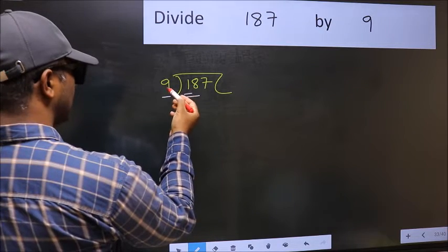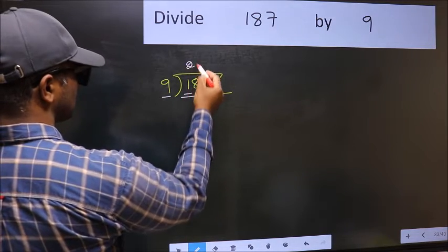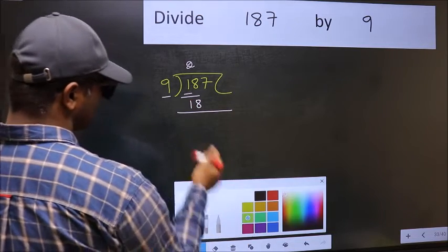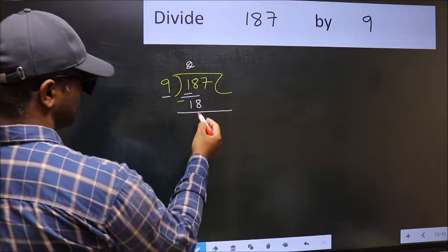When do we get 18 in 9 table? 9 to 18. Now, we should subtract. 18 minus 18 is 0.